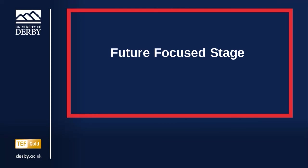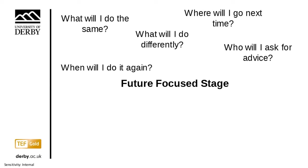Then we've got our future focus stage. Here we're thinking about what would happen next time: What will I do the same next time? What will I do differently? When will I do it again? Where will I go next time? Who will I ask for advice? You can see those same who, what, where, when questions, but this time looking at the future. We're pulling together what we're going to learn from the event and how that's going to impact what we do in the future. This builds on the other stages: we've got our foundation of description, we've done our critical thinking which pulls further analysis out, and now we take that into a plan for the future and real learning points. That's where the impact of the reflection comes in, in our future focus stage.